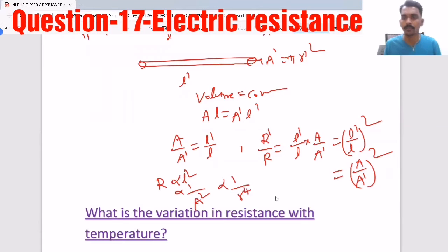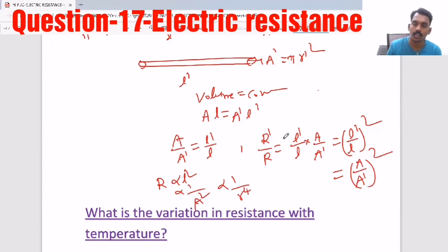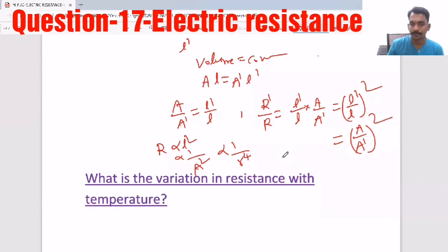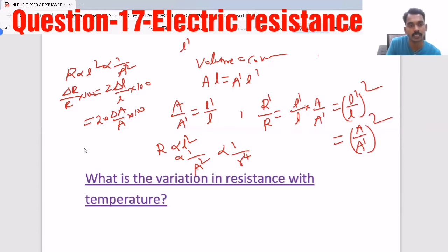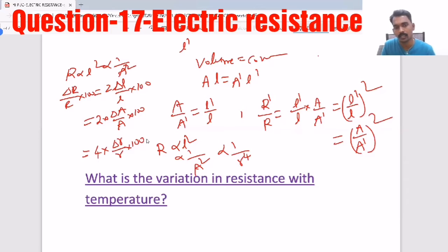Resistance is inversely proportional to the 4th power of radius in case of stretching. For percentage change: since R ∝ L², we get (ΔR/R)×100 = 2×(ΔL/L)×100. It is also inversely proportional to A², so (ΔR/R)×100 = 2×(ΔA/A)×100 (resistance decreases with increase in area). In terms of radius: (ΔR/R)×100 = 4×(Δr/r)×100.